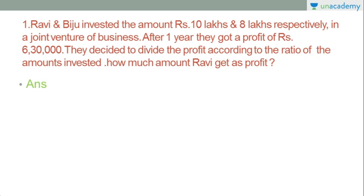This is a company board exam question. There are two names: Ravi and Biju. They have 10 lakhs and 8 lakhs invested. After one year, the profit is Rs. 6 lakhs 30 thousand.